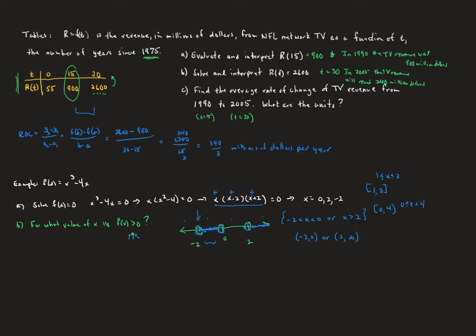You could also show this graphically on your graphing calculator. If we graph this on an x-y axis, the places that made f of x equal to 0 are x-intercepts. You can see from the graph that two parts of the curve are where f of x is greater than 0, and the x values that generate those parts are exactly what we found using the number line.